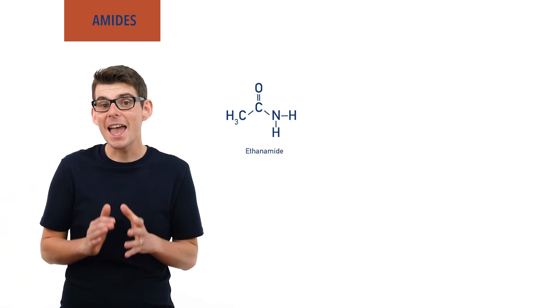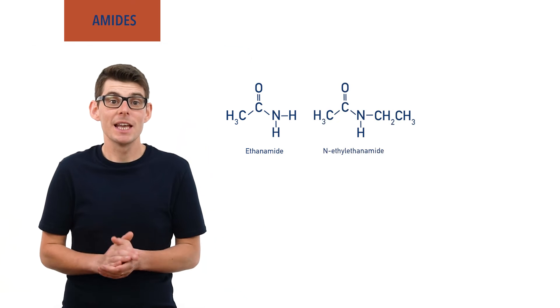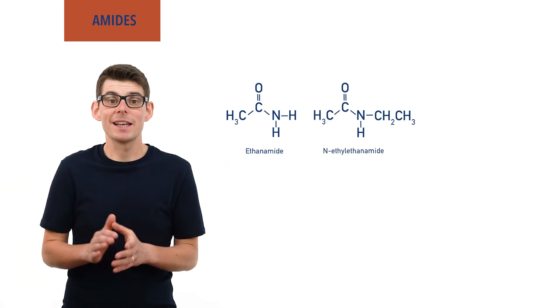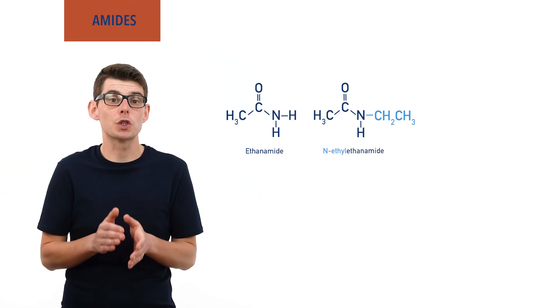N-ethyl ethanamide is a secondary amide as it has an ethyl group bonded to the nitrogen.